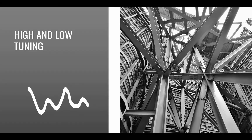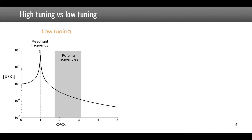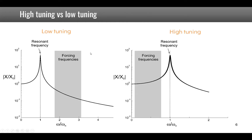Most design and remedial measures consist in trying to stay away from resonance or trying to decrease the amplification at resonance. The first measure we're going to discuss is high and low tuning. Low tuning consists in tuning the resonant frequency of your structure so that it is lower than the forcing frequencies, whereas high tuning consists in tuning the structure so that the resonant frequency is higher than the forcing frequencies. The goal is always to avoid the forcing frequencies matching the resonant frequency and inducing large vibration amplitudes.